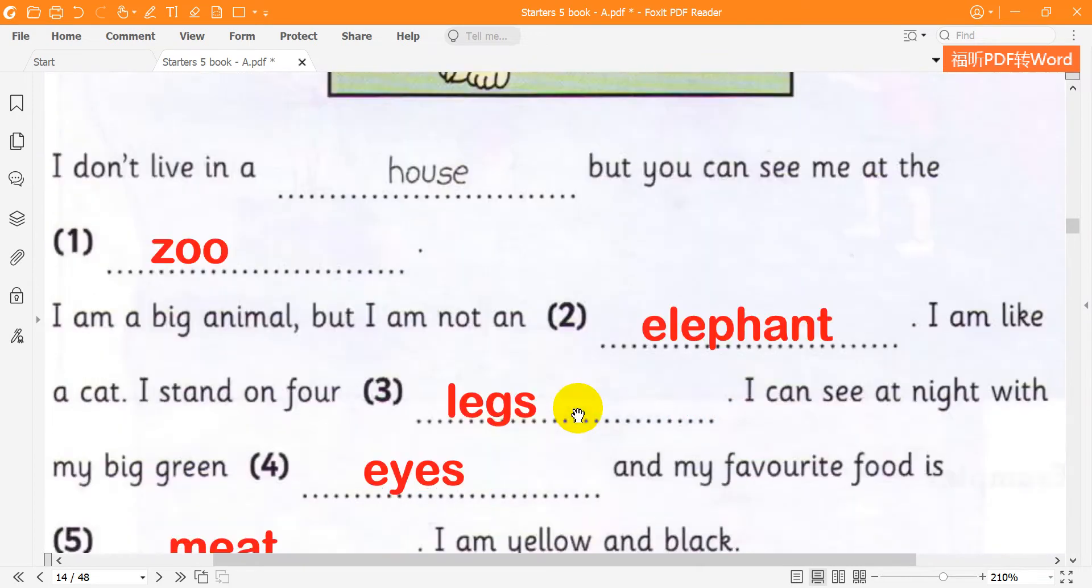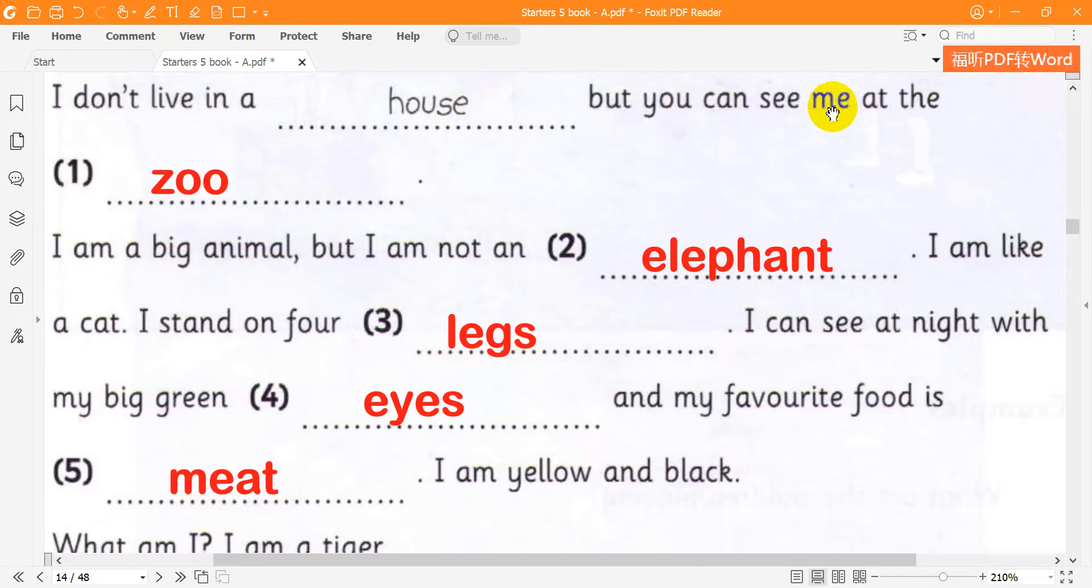A Tiger. I don't live in a house, but you can see me at the zoo. I am a big animal, but I am not an elephant. I am like a cat. I stand on four legs.